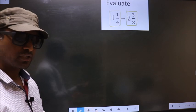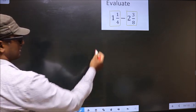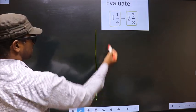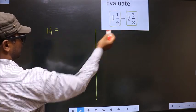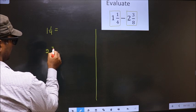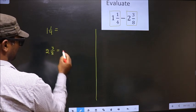Okay. So, let us convert. The given mixed fractions are 1 1/4 and 2 3/8.